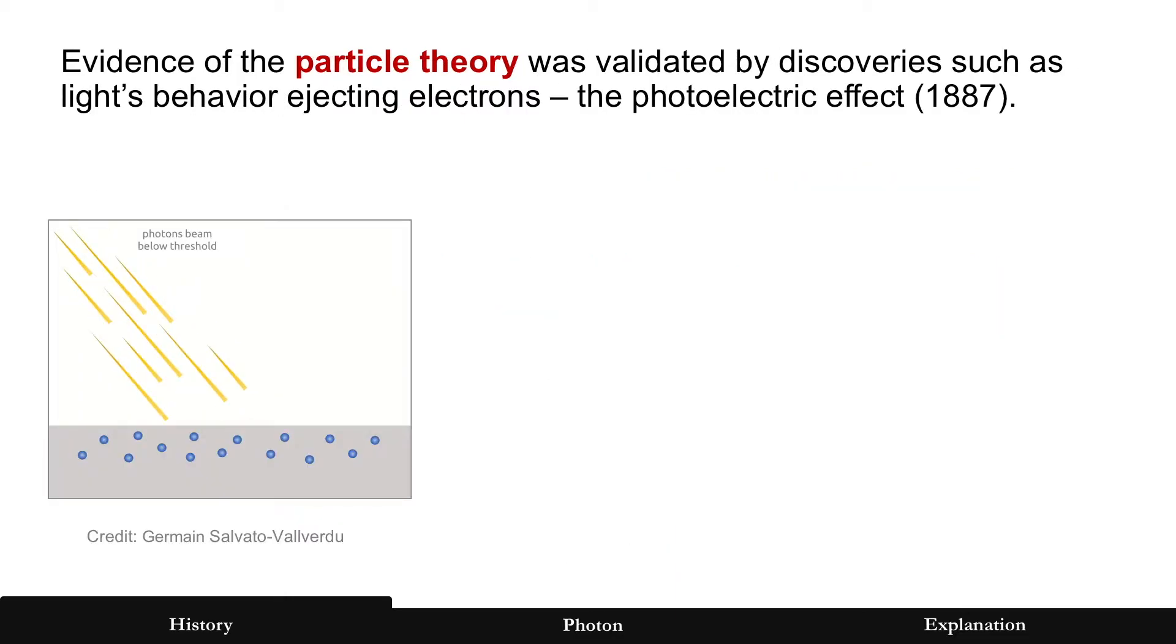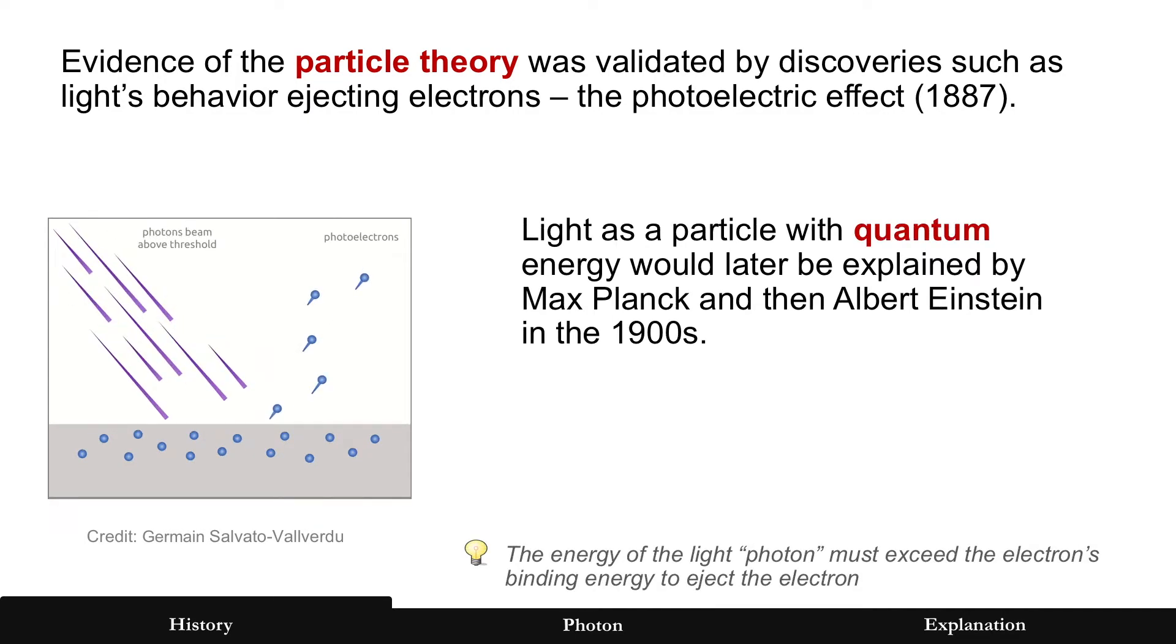There's also evidence for the particle theory, which was validated with the photoelectric effect by the late 1800s. Light as a particle with quantum energy would later be explained in the early 1900s by Max Planck and Albert Einstein.